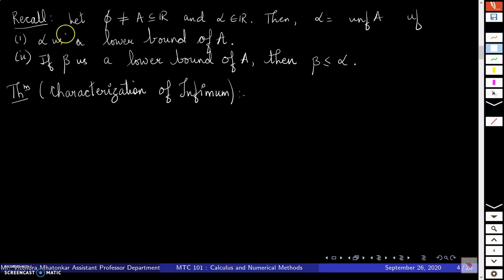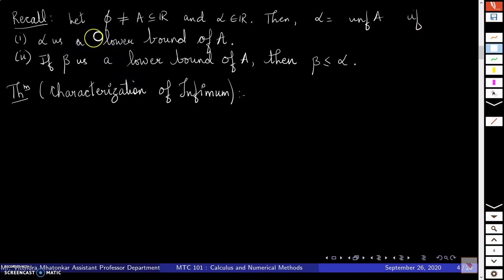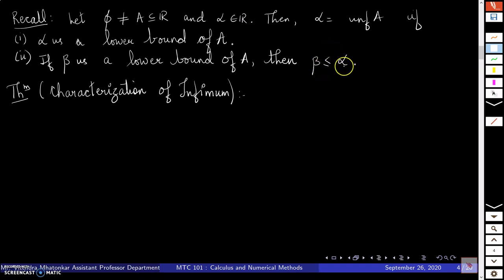Let's recall the definition of infimum. If I have a non-empty subset A of ℝ and alpha is a real number, then alpha is said to be the infimum of A if two conditions are satisfied: first, alpha is a lower bound of A; second, if beta is any other lower bound of A, then alpha is greater than or equal to beta — meaning alpha is the greatest lower bound of A.